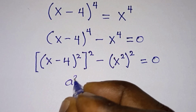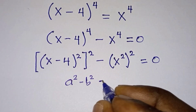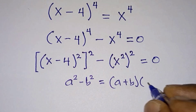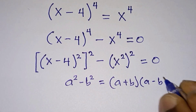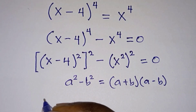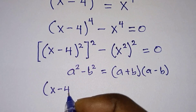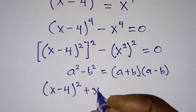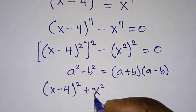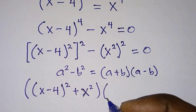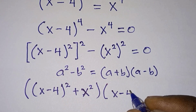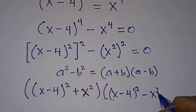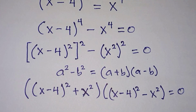Now let's recall that if we have a squared minus b squared, this can be expressed as (a plus b) times (a minus b). So from here we're going to have [(x minus 4) squared plus x squared] times [(x minus 4) squared minus x squared].